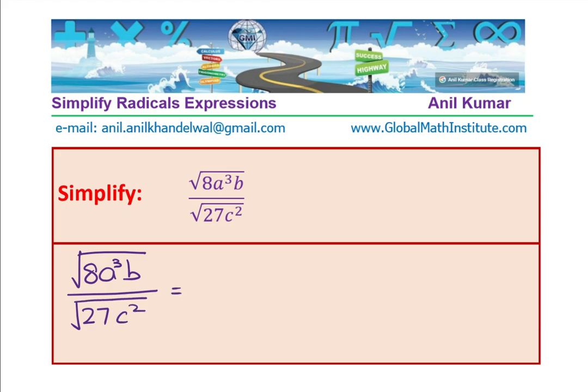Now, 8 can be written as 4 times 2, which is 2√2. Right? So, 8 can be written as 2√2. Right?